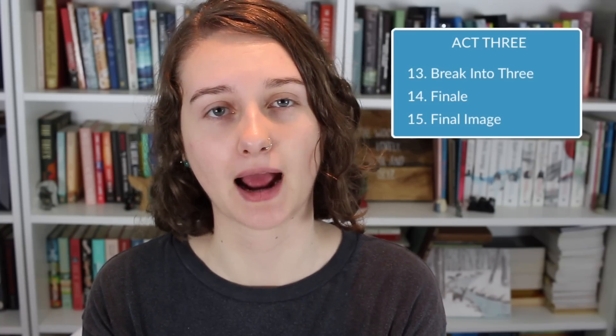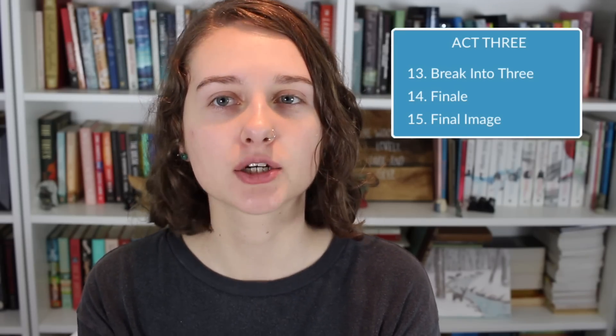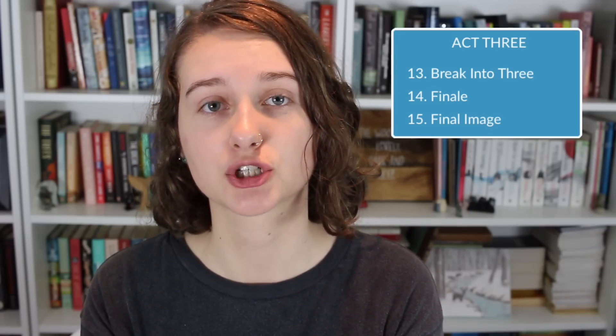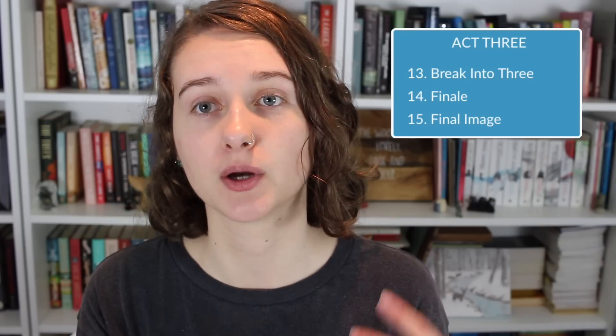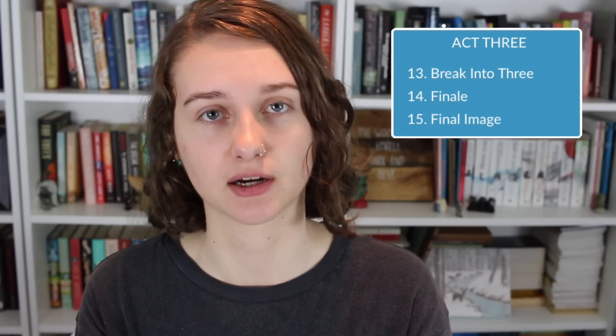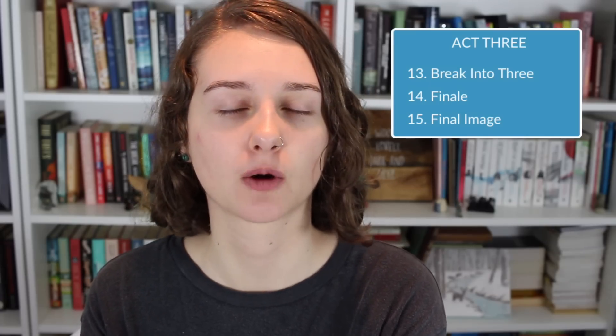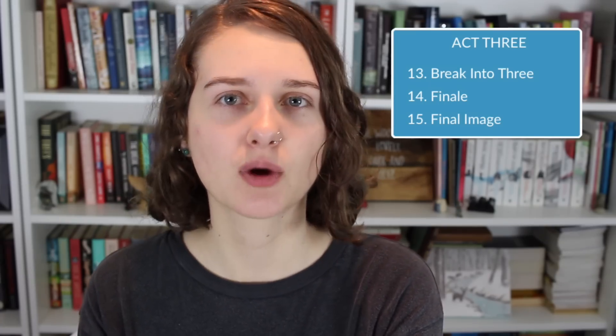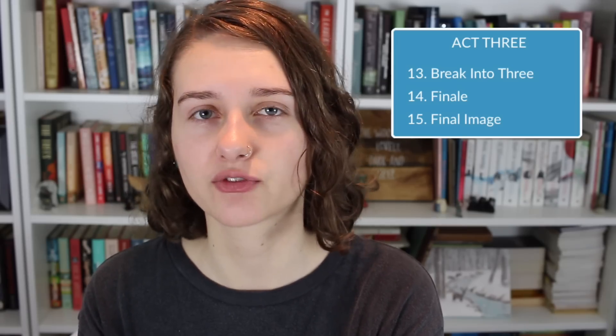That leads us to break into three. Similarly to break into two, it happens with the main character making a decisive action — when you're thinking of this beat, really think about what choice your character is making here. Then after that we have the climax of the book, which here is known as the finale. This is basically the ultimate showdown where your character is either going to achieve or fail at achieving their goal. And then finally there's the final image. This is designed for film where there's a literal final image, but in fiction it's kind of the same — you think about your last scene, final paragraph, even final sentence, and the last note of the story you want to leave the reader with.